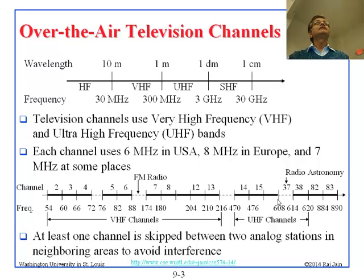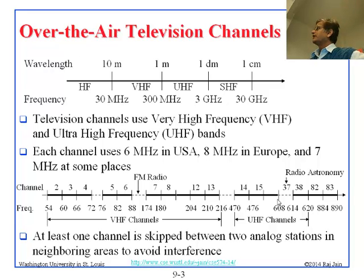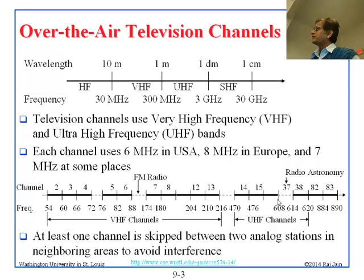A student asks what is between channels 4 and 5. There must have been some allocation there before the TV channel band was defined. FM radio occupies that region — when you tune your FM radio it starts at 88 MHz and goes up, so there must be additional allocations between the TV channel groups beyond just FM radio.